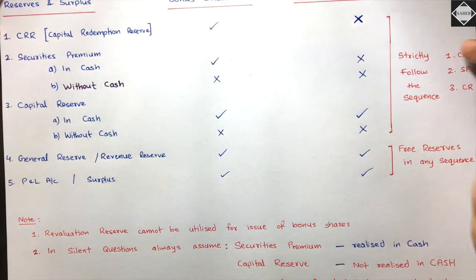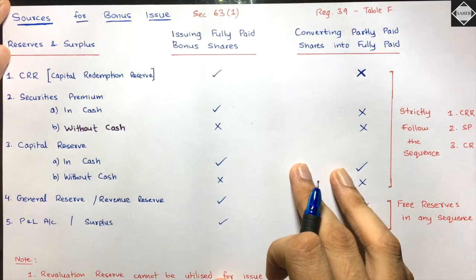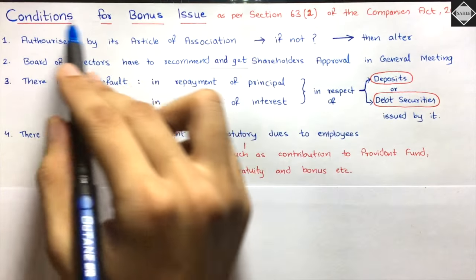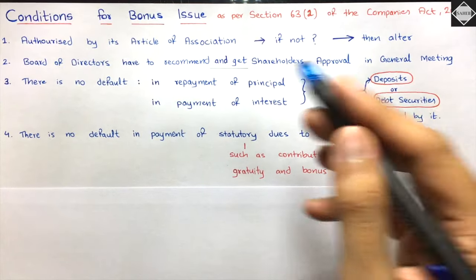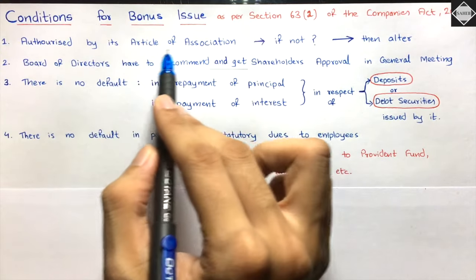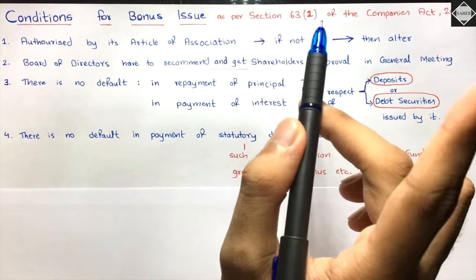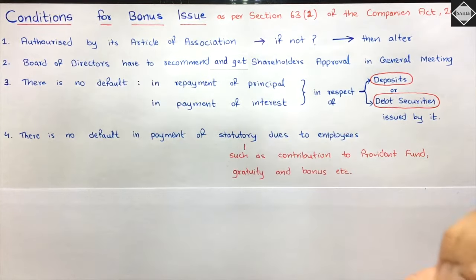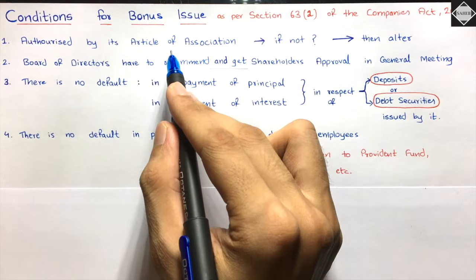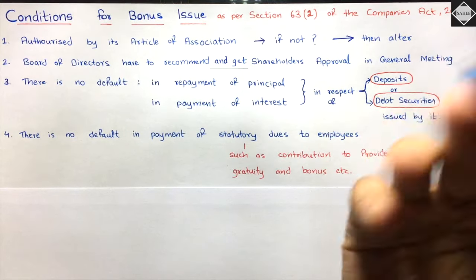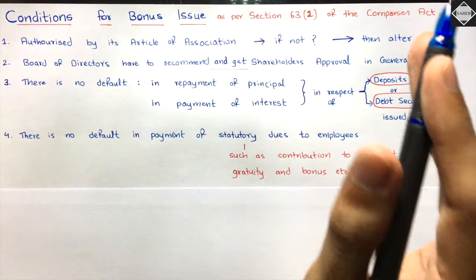Now let's look at the conditions for bonus issue as per Section 63(2) of the Companies Act. The first condition: bonus issue must be authorized by its Article of Association. If not permitted, the company must alter its Article of Association per Section 14 by passing a special resolution, then proceed with the bonus issue.